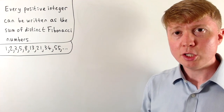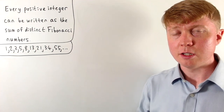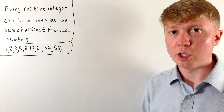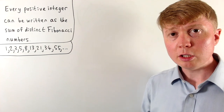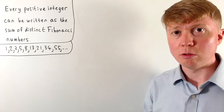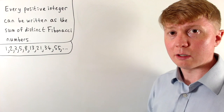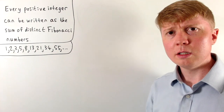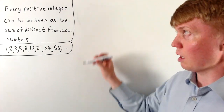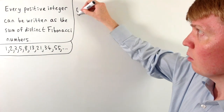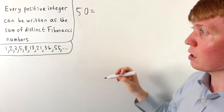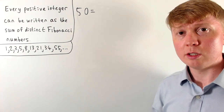We're going to explore writing positive integers as the sum of distinct Fibonacci numbers, and we'll actually prove that this is always possible. But first let's just explore how to do this. So if we take a positive integer, let's say 50, we'll see how we can write this as the sum of distinct Fibonacci numbers.